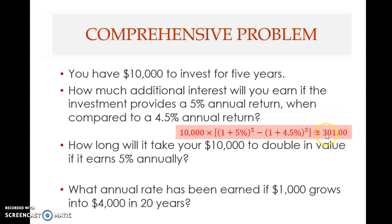This $301 is not the future value itself — it is the difference in future value, because the question asks for how much additional interest you earn. This additional interest is computed by taking the difference in the future values. That's the answer for this part.